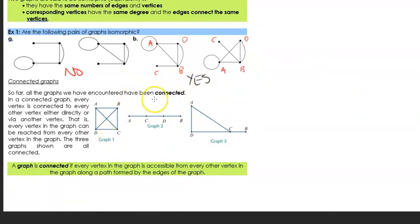Next, we're going to look into connected graphs. So far, all the graphs we have encountered have been what's called connected. In a connected graph, every vertex is connected to every other vertex either directly or via another vertex. So there's always some type of connection between every single vertex, whether it's straight or whether it's via another vertex. And all three of these graphs here, they're all connected. I can't get from B to D directly, but I can go via C to D or I can go via C to A to D. There's some way to get from one vertex to another. So a graph is connected if every vertex in the graph is accessible from every other vertex in that graph along a path formed by its edges within that graph.